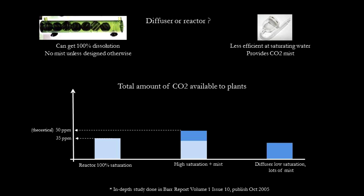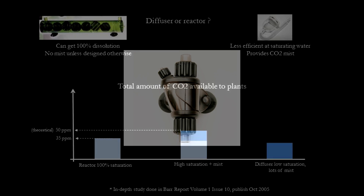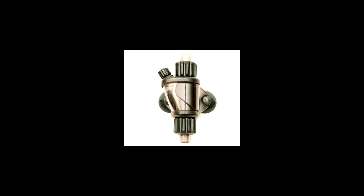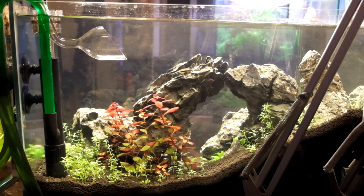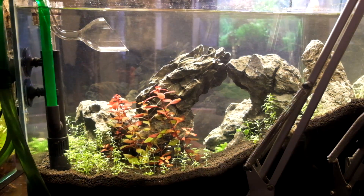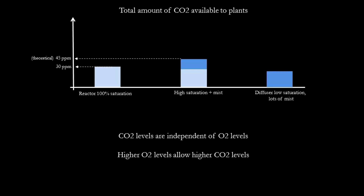A more optimized scenario to get the maximum amount of CO2 to the plants is to have the maximum amount of CO2 dissolution possible — about 30 to 35 parts per million before the fish get irritated — and on top of that provide a CO2 mist in the tank. For myself nowadays, I use an in-line atomizer unit that gives a good rate of dissolution and also sprays out a very fine mist that makes its way all around the tank.